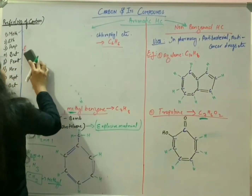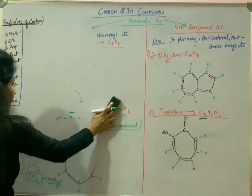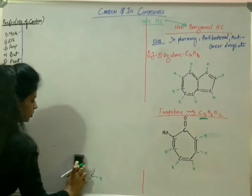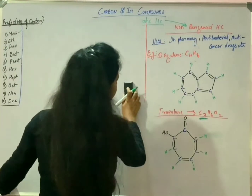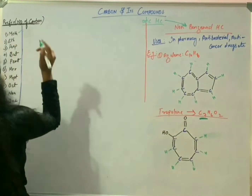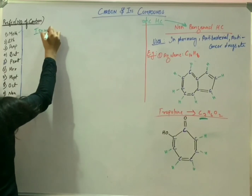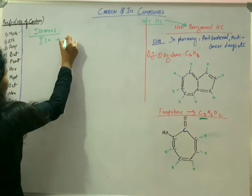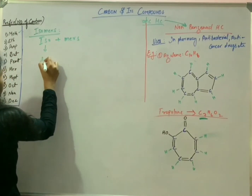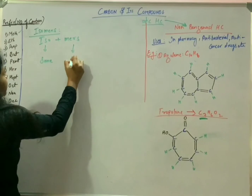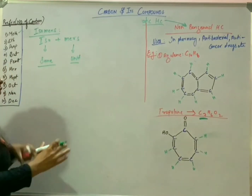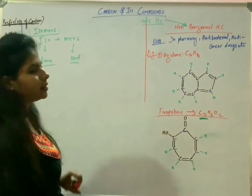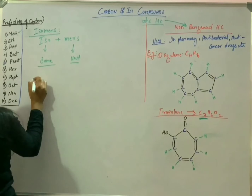The next topic is isomers. Isomer is a combination of two words: iso means same, and more means unit. So those type of molecules which have the same molecular formula but different arrangements are known as isomers.